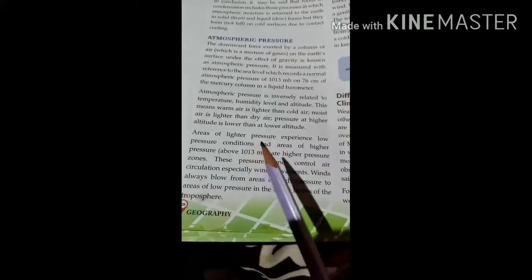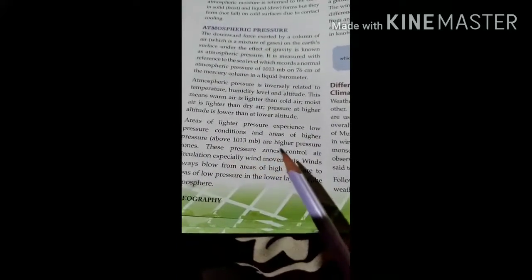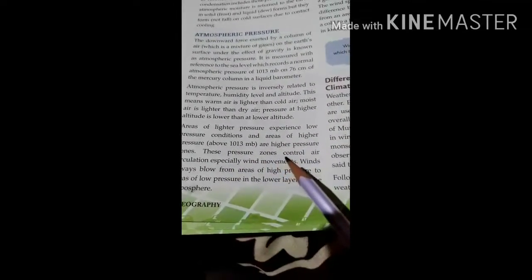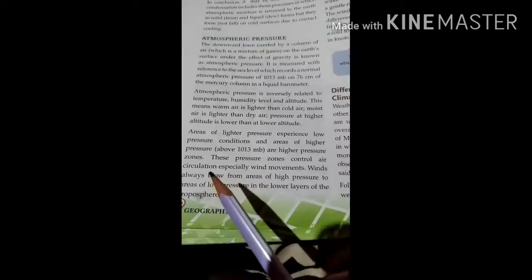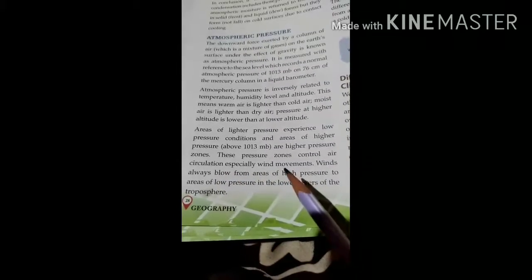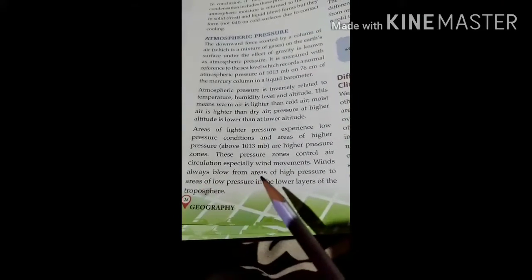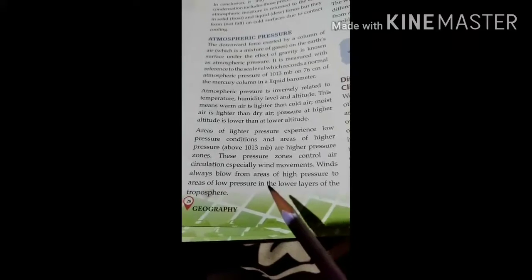Areas of lighter pressure experience low pressure conditions, and areas of higher pressure are high pressure zones. These pressure zones control air circulation, especially wind movement. Wind always blows from areas of high pressure to areas of low pressure in the lower layers of the troposphere.